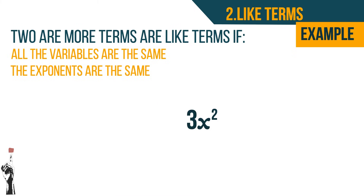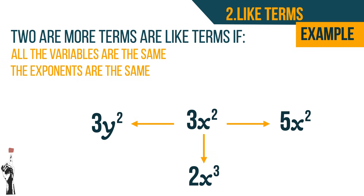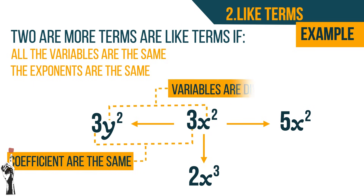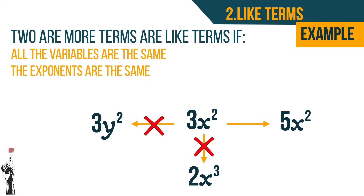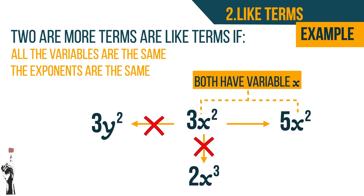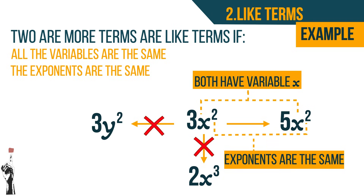Let's look at 3x squared and compare it to 3y squared, 2x cubed, and 5x squared. 3y squared has the same coefficient but different variables, so it's not a like term. 2x cubed has the same variable but different exponents, so it's not a like term. 5x squared has the same variable x and the same exponent 2, making it a like term with 3x squared.